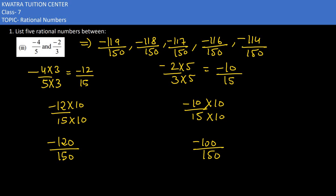So these are the five rational numbers that are in between minus 4 by 5 and minus 2 by 3.